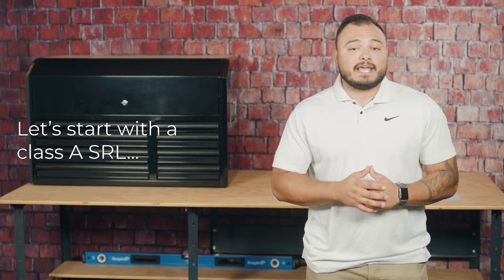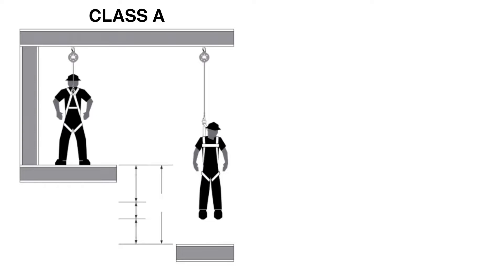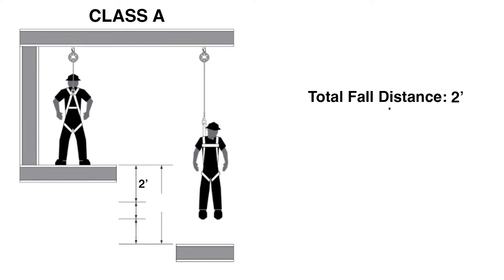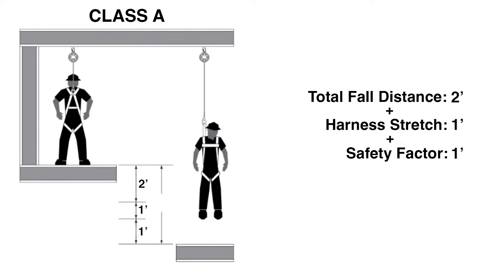Let's start with the Class A SRL. We start with the total fall distance, which for a Class A is two feet. Then we add one foot for harness stretch and a safety factor of one foot. Once we add all these values, we see that the working surface must be at least four feet above the next lower level or ground.